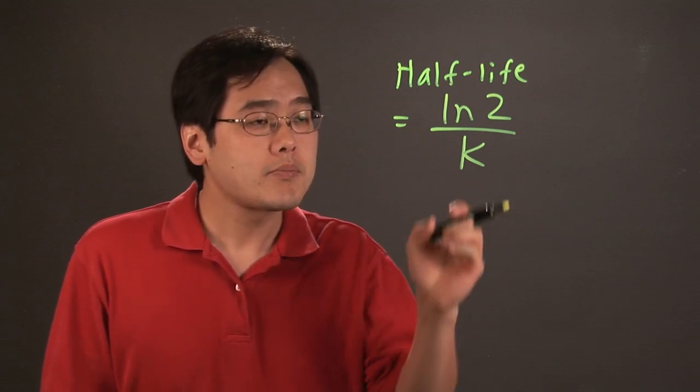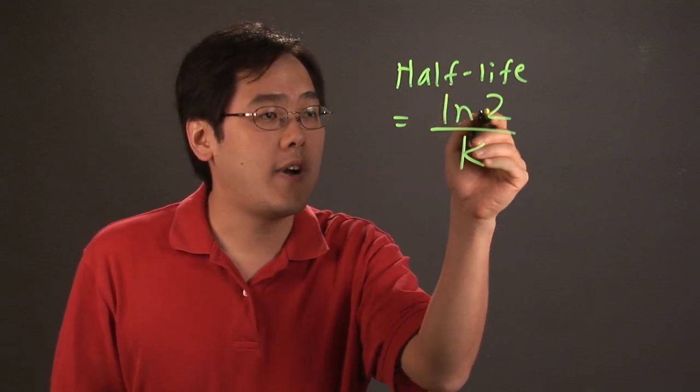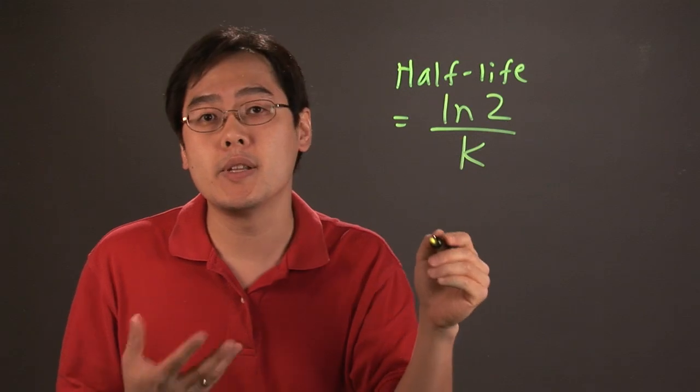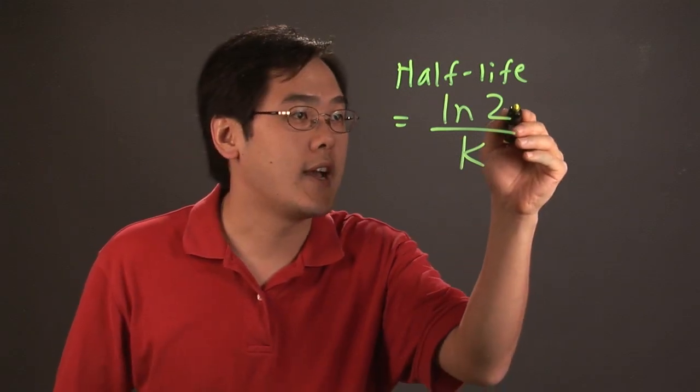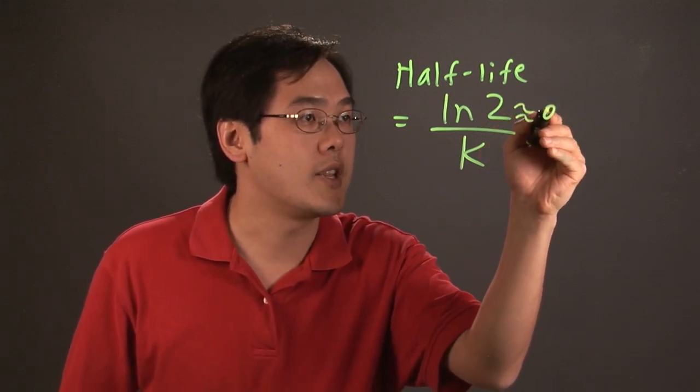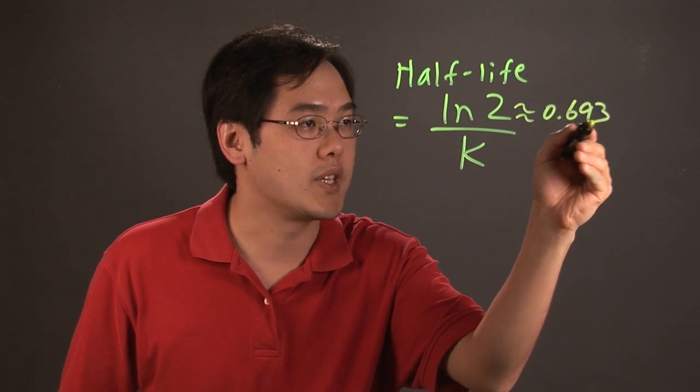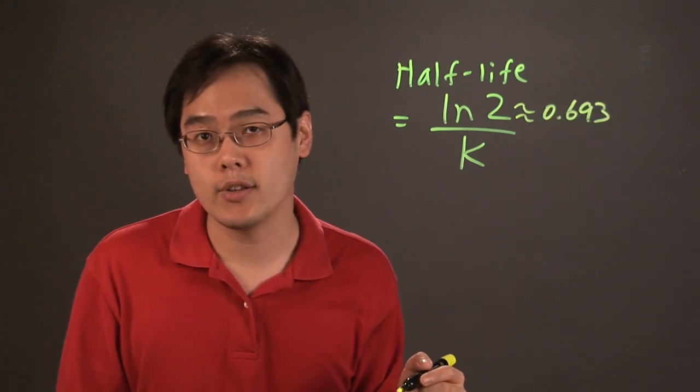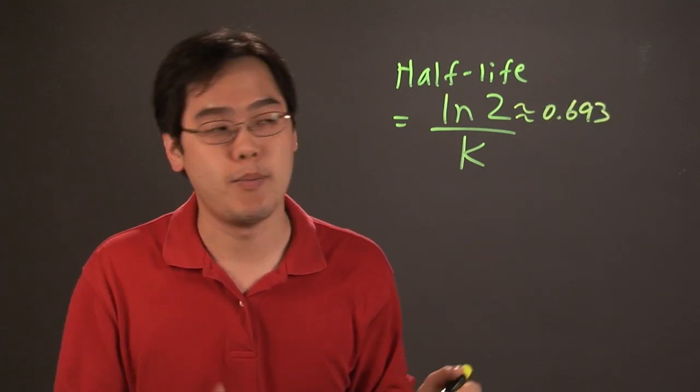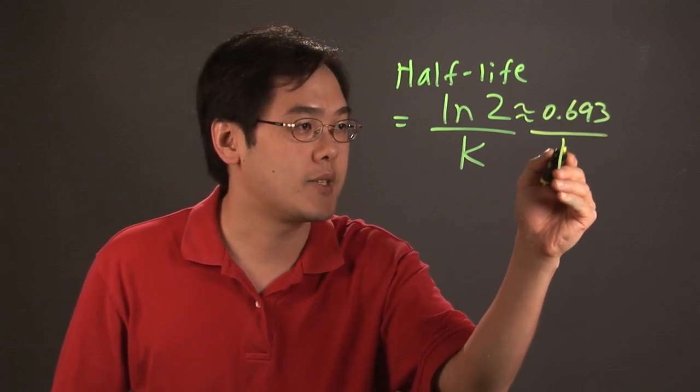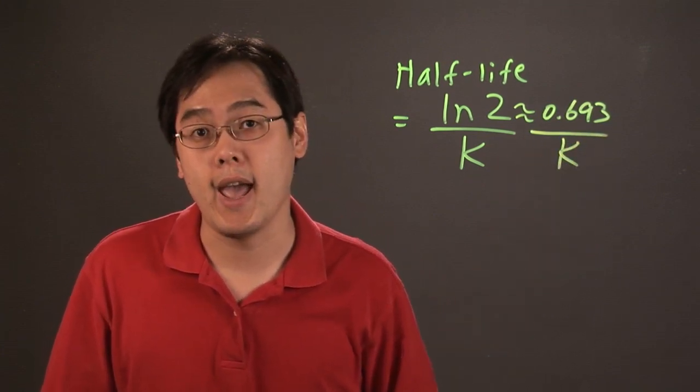Now, if you want to find what natural log of 2 is, keep in mind that it's a number that's going to keep on going. And natural log of 2 is actually a number that's very close to 0.693. But again, if you use a calculator on natural log of 2, it does keep on going. So it's really a number that's approximately 0.693 divided by k.